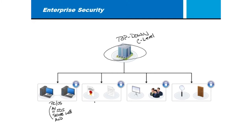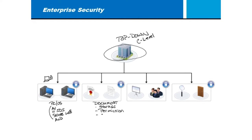One area is document security. To some of you that might mean how it's stored. If these computers — say laptops — have important documents inside them, that's where we start thinking of encryption. Other things about storage would be permissions: who has the rights to view what information? It's also how we transmit that information, whether we transmit it securely or not.